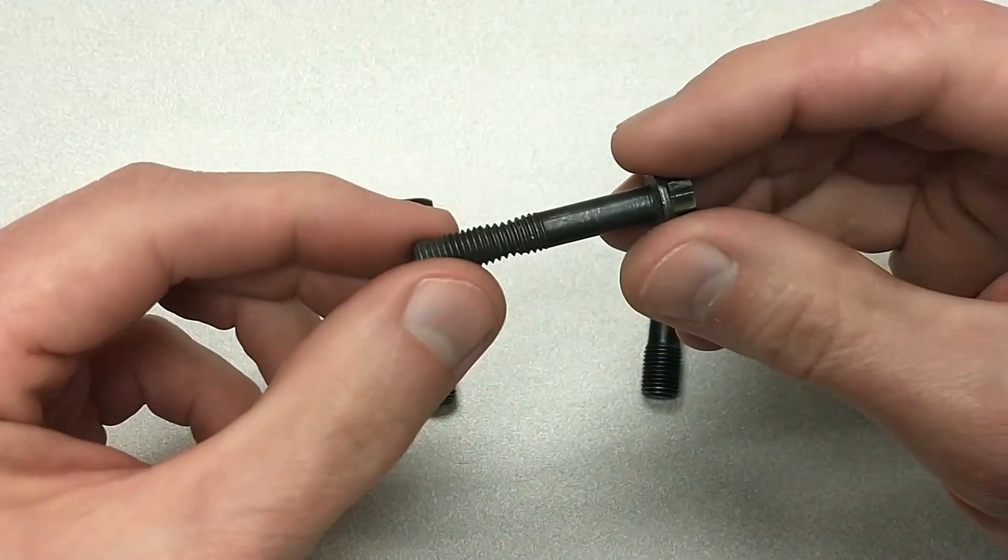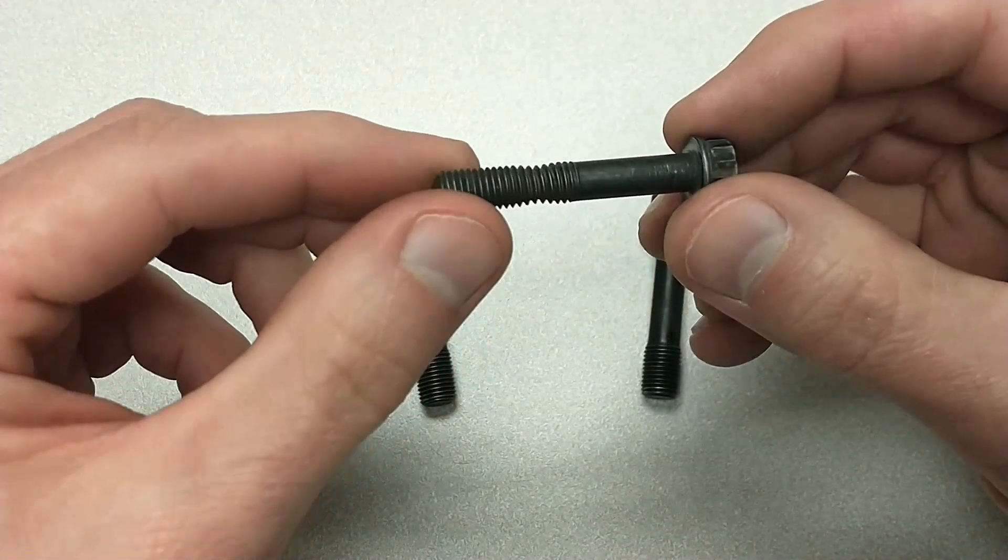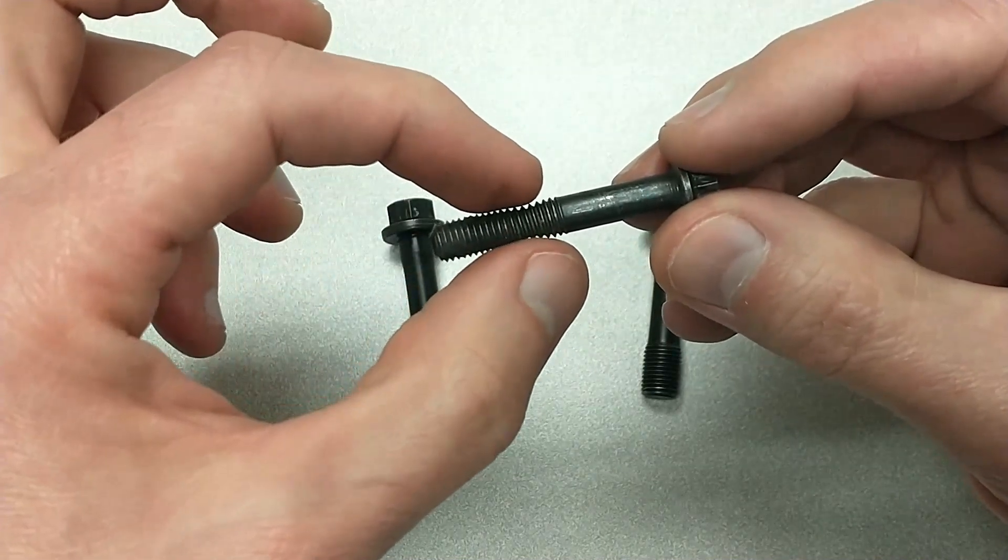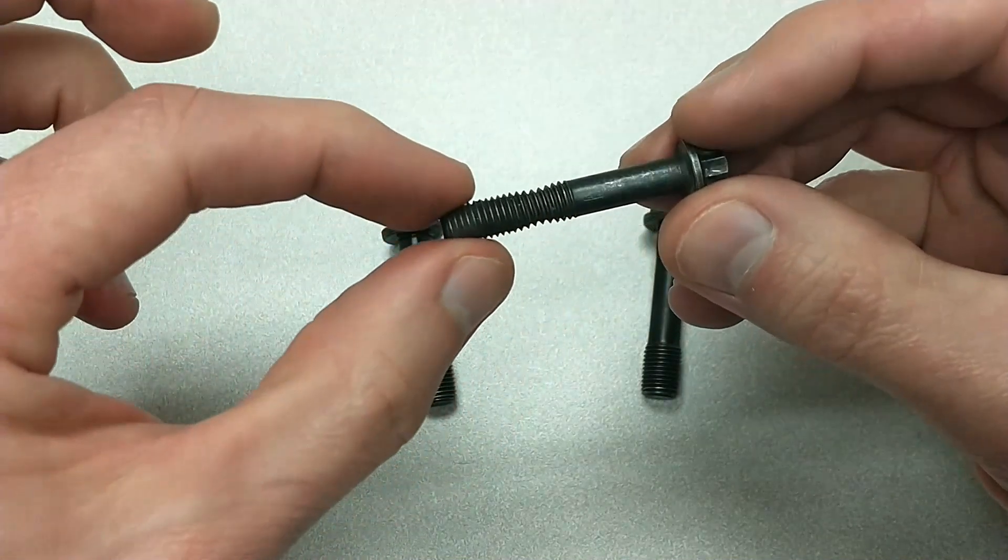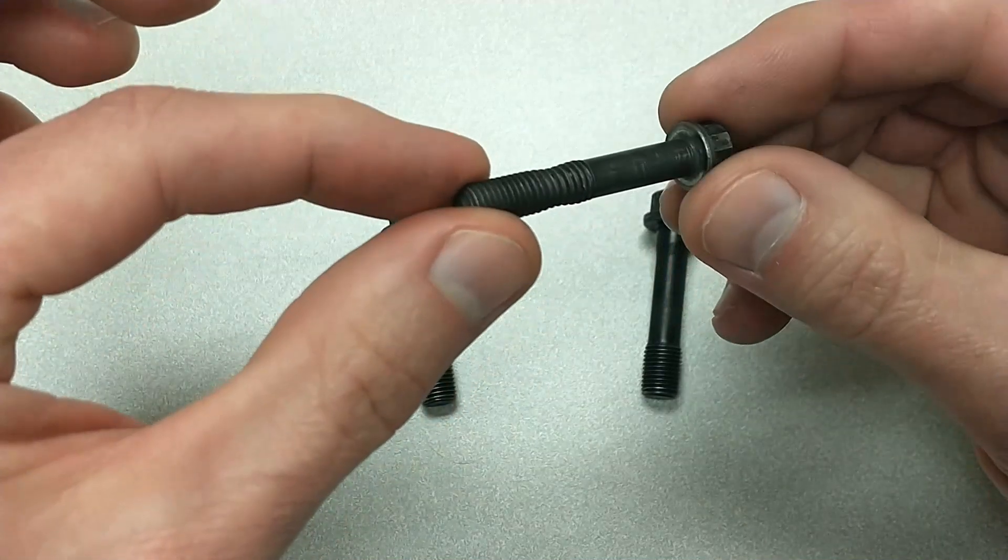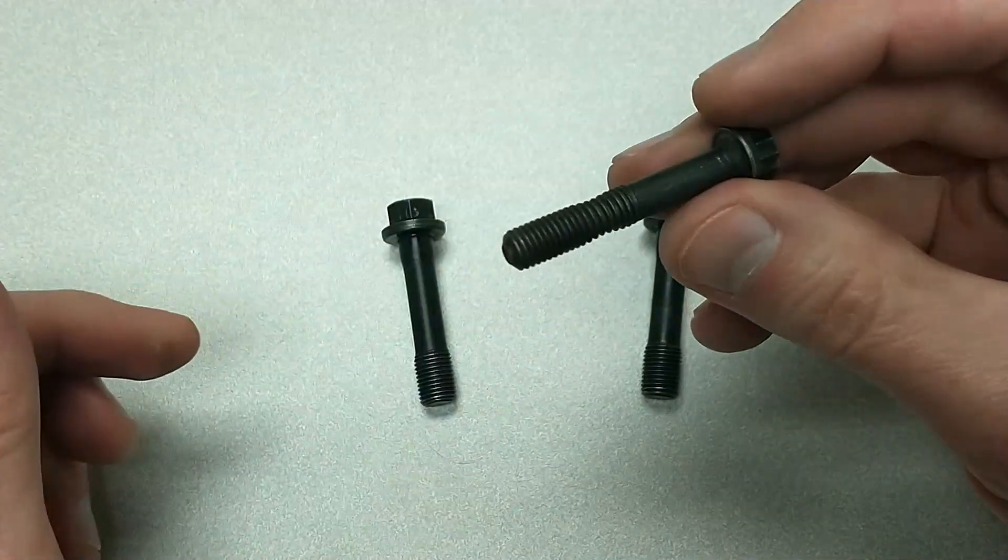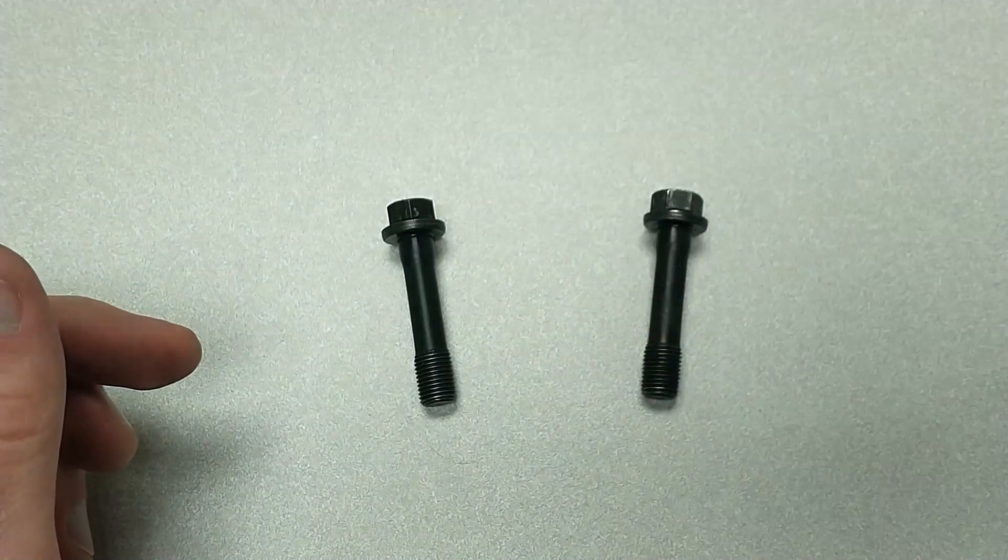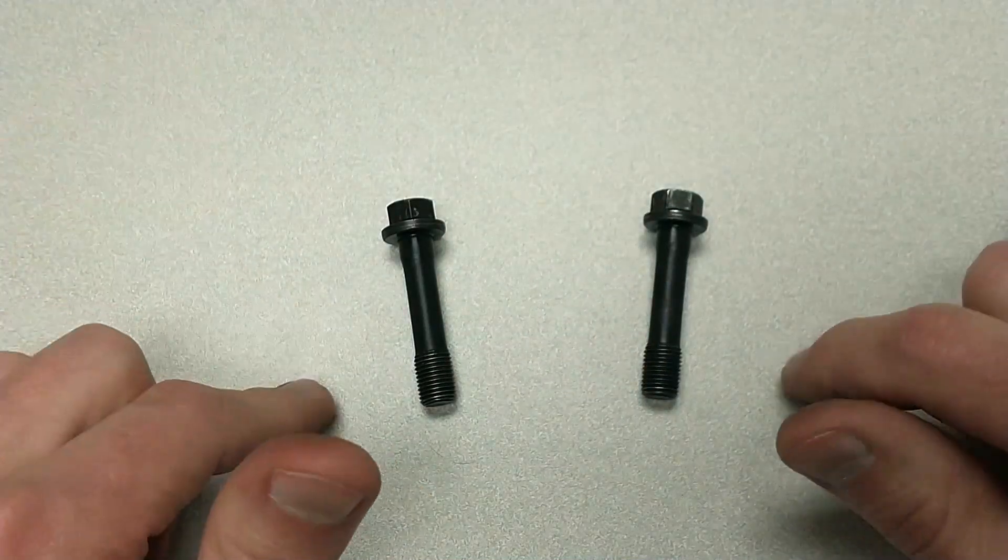This bolt here is an example of a bolt that was over-tightened again and it yielded. If you can see in the middle, it stretched and permanently deformed and should not be reused. So, having said all this, let's take a look at these two bolts.